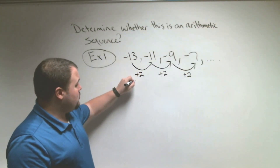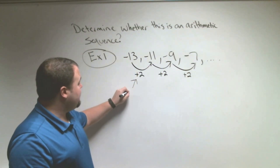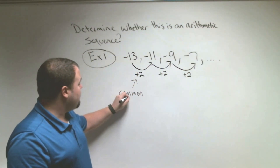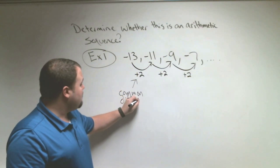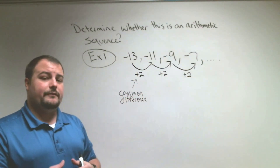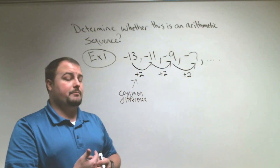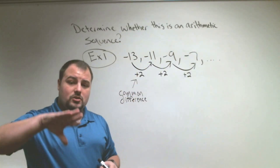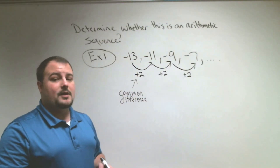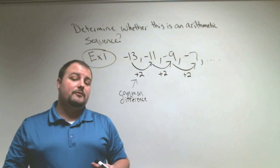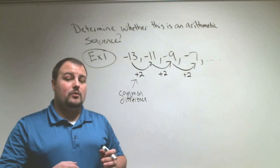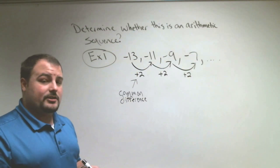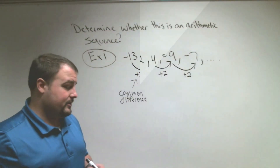The number 2 is called our common difference — the difference from one number to the next number. So 2 is our common difference; it is two spaces away to the next number. In order to be an arithmetic sequence, we have to be adding or subtracting the same number, and it has to be a continuous pattern. Let's look at another example.